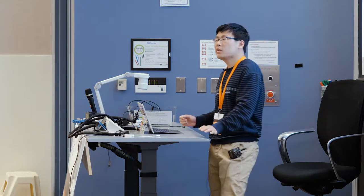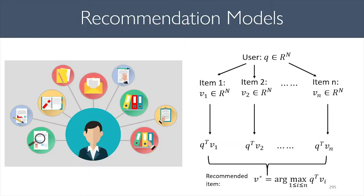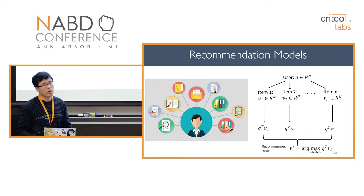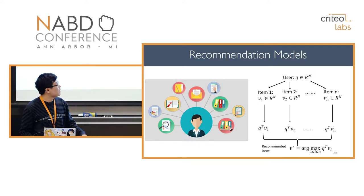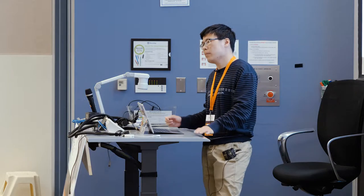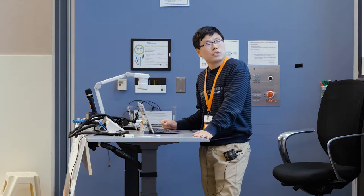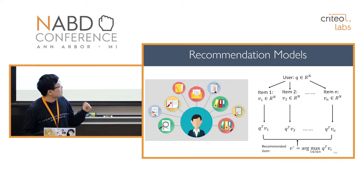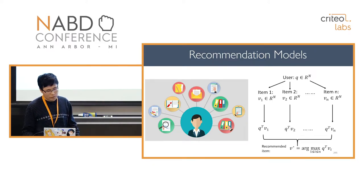The core part of any recommendation system is figuring out the best item to recommend for any given user. A popular approach is called embedding. The key idea is to represent users and items by vectors of real numbers. We represent a user by vector Q and item I by vector VI, both in N-dimensional space. To find which item to recommend, we compute the inner products between the item vector and the user vector, recommending the item with the highest inner product.